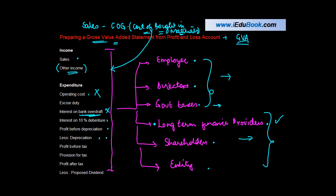Then profit before tax, provision for tax, profit, proposed dividend. This obviously belongs to the shareholder group, so it is also not deducted.